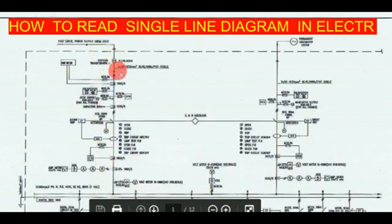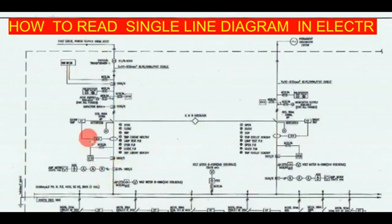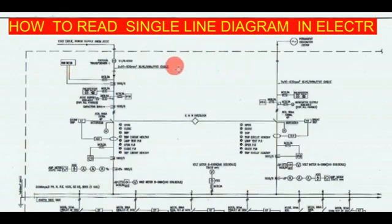The first part is the main incomer. The main incomer is the generator. The main incomer connects to the bus bar.